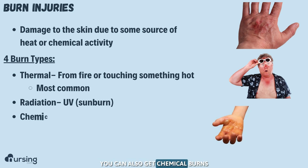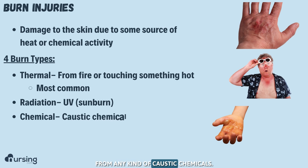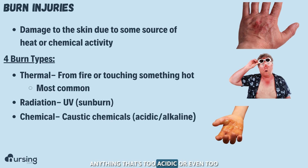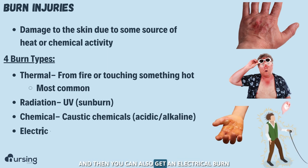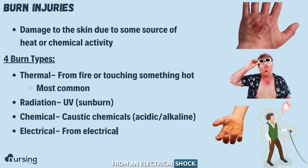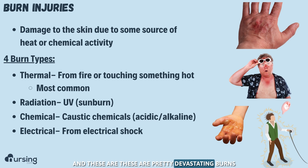We can also get chemical burns from any kind of caustic chemicals — anything that's too acidic or even too alkaline can cause a burn. And then you can also get an electrical burn from an electrical shock, and these are pretty devastating burns because they kind of travel throughout the body.